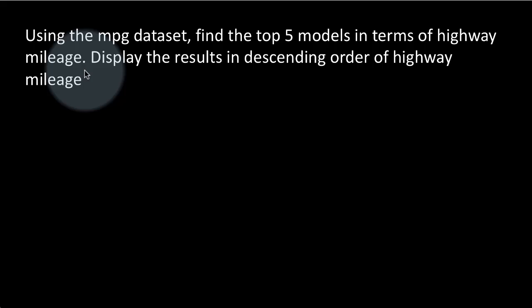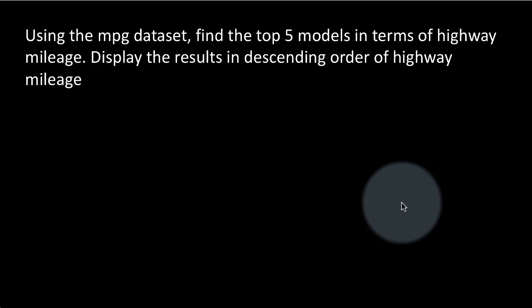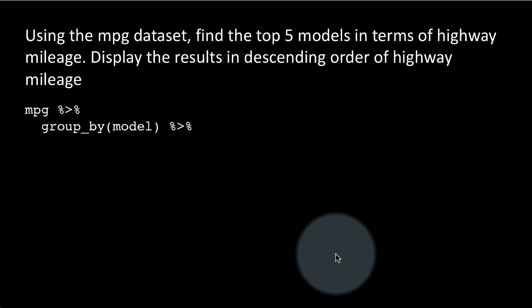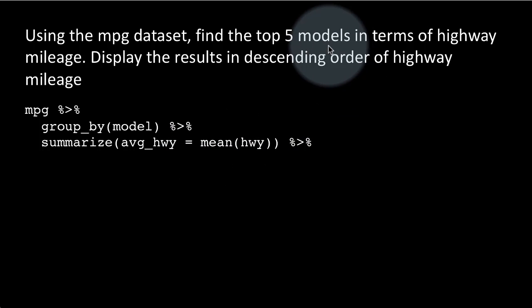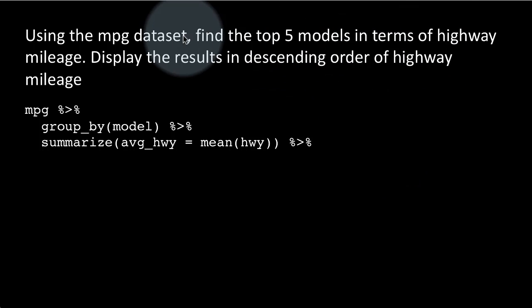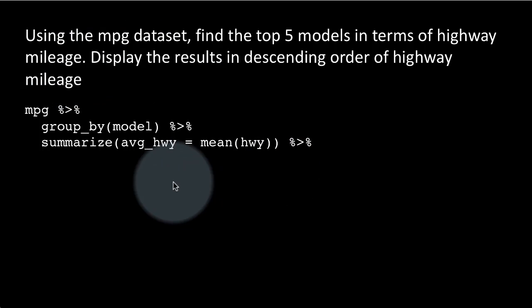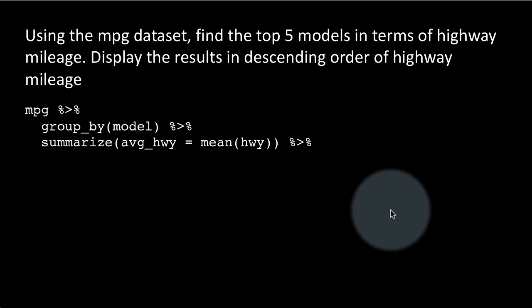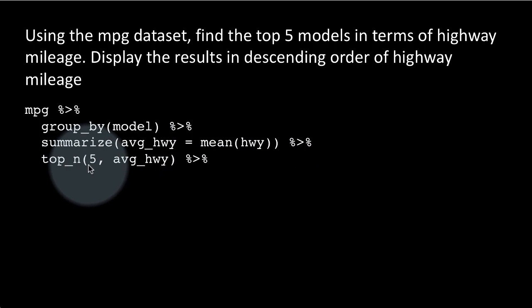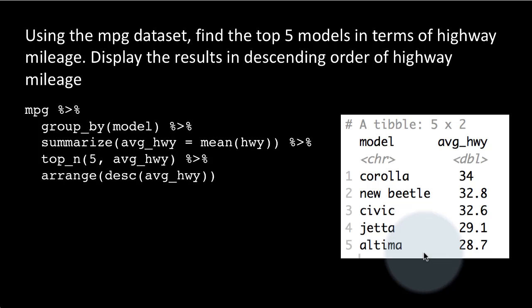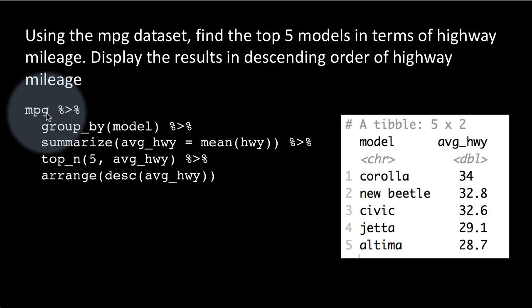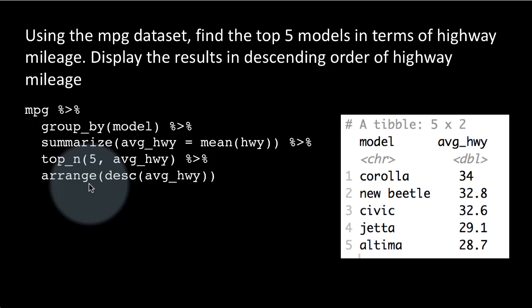The next thing we want to consider: use the MPG dataset to find the top five models in terms of highway mileage, displayed in descending order. We are going to use the top_n function. So: MPG, group_by model — we want the top five models in terms of highway mileage, so we group by model. For each model we calculate the average highway mileage using summarize, where average_highway equals mean(hwy). Then we take the top five of the average_highway column and arrange in descending order of average highway mileage.